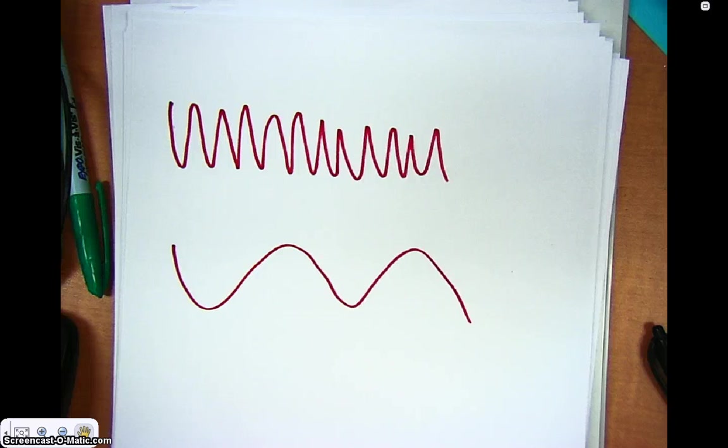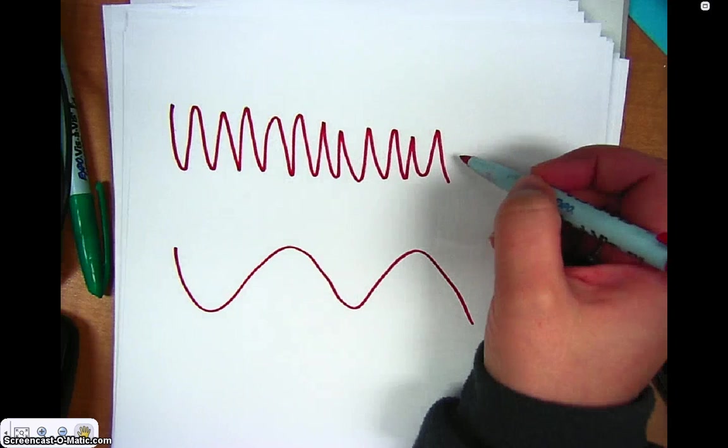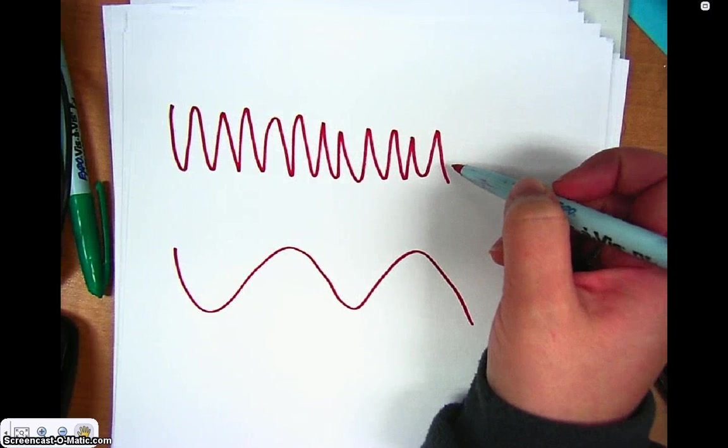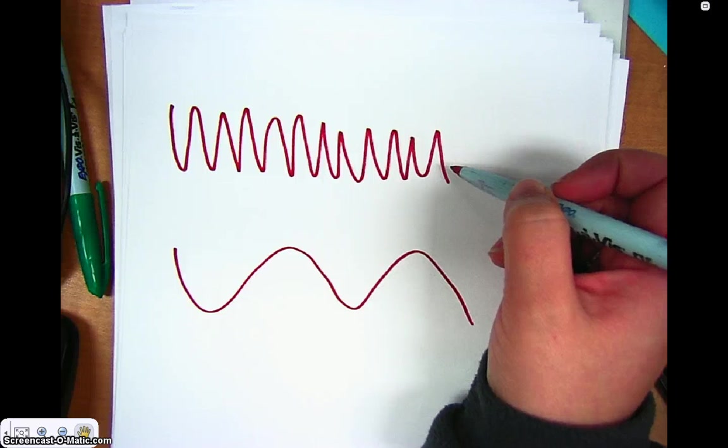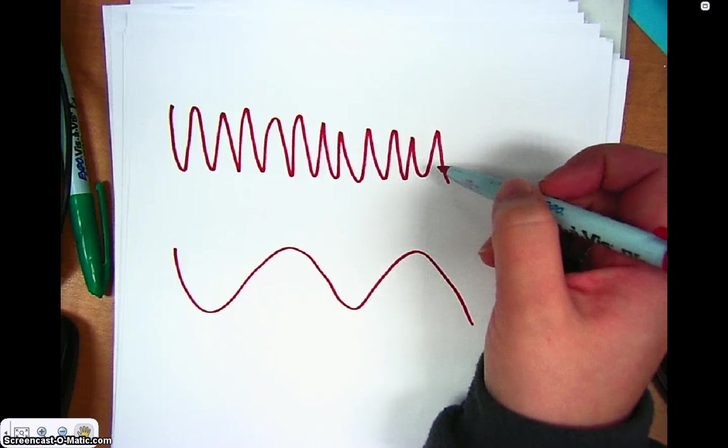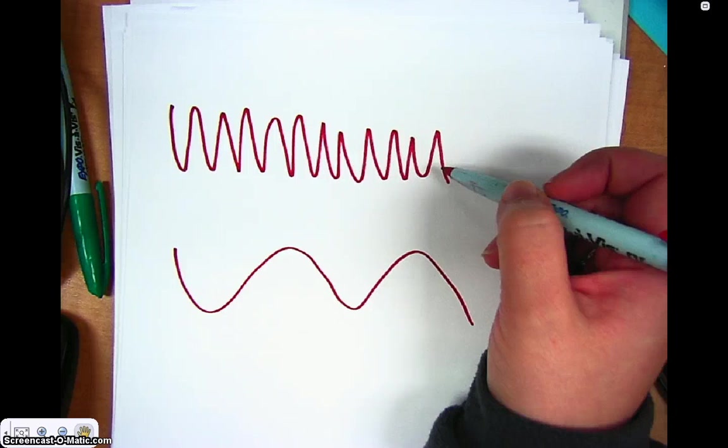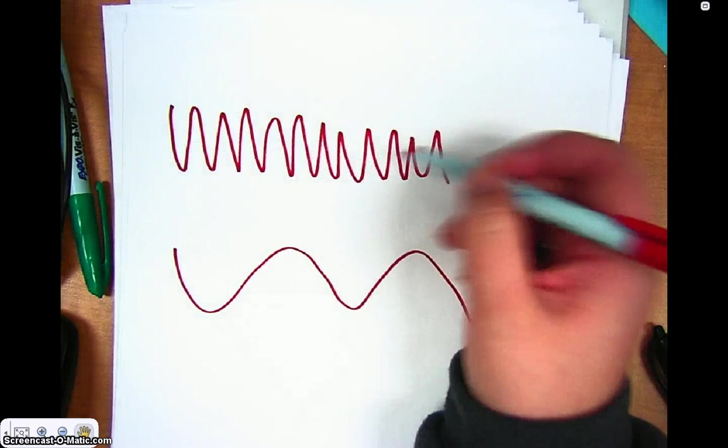On the electromagnetic spectrum, really small waves are like gamma rays, and x-rays, and UV rays.